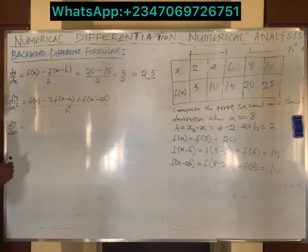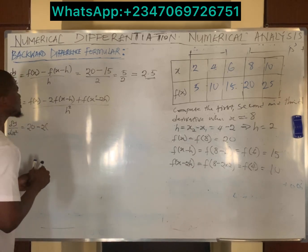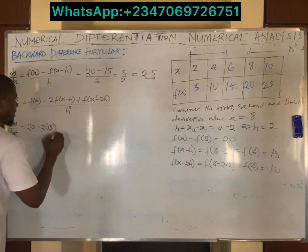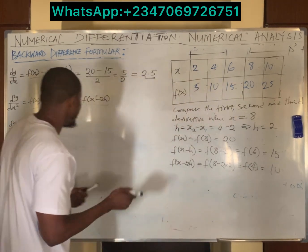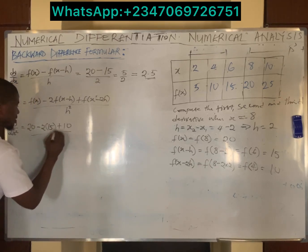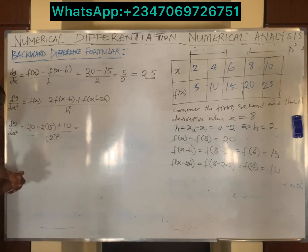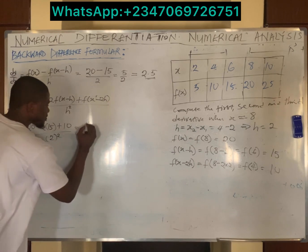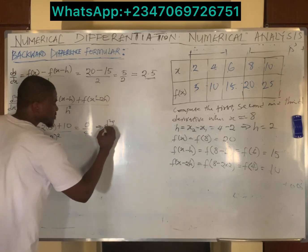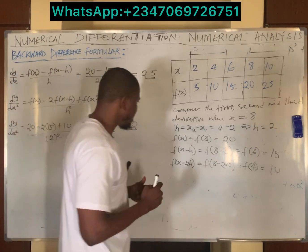Plugging into the second derivative formula: d²y/dx² equals 20 minus 2×15 plus 10, divided by 2 squared. Evaluating the numerator: 20 minus 30 is negative 10, plus 10 is 0. So 0 divided by 4 equals 0. This implies d²y/dx² equals 0 using the backward difference method.